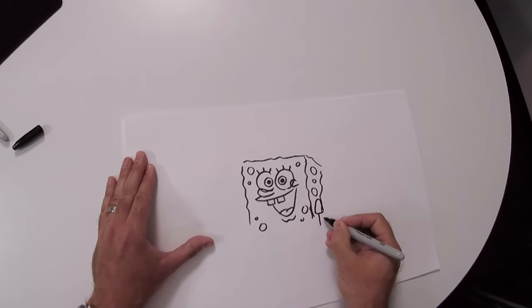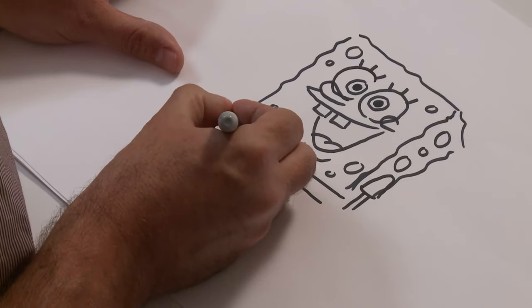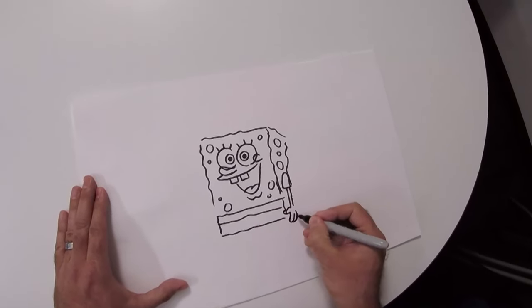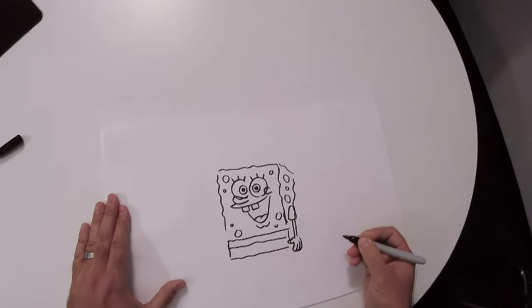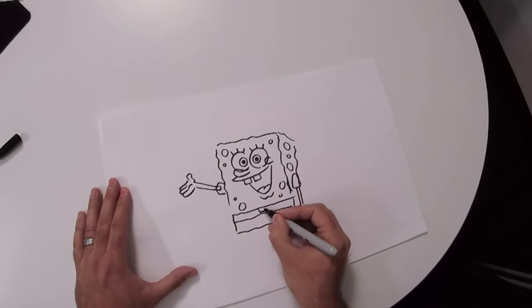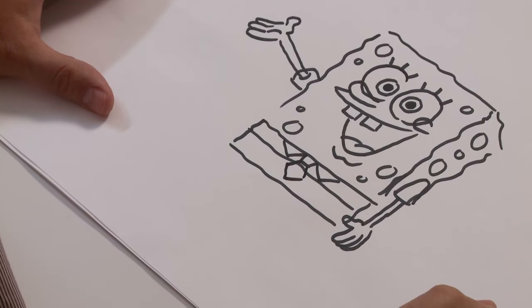And then we'll put the arm in here. Put the pants below that. Now we'll put the hand on there. His fingers are short and fat. Oh! We want to go straight down from the eyes, and that's where we want to put SpongeBob's tie. Then you put the rest of the tie below that.